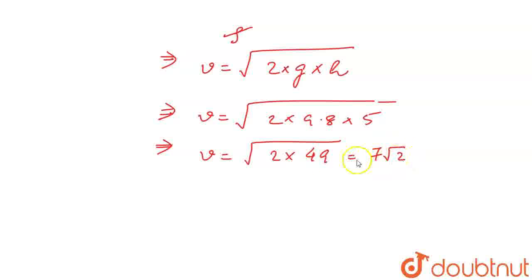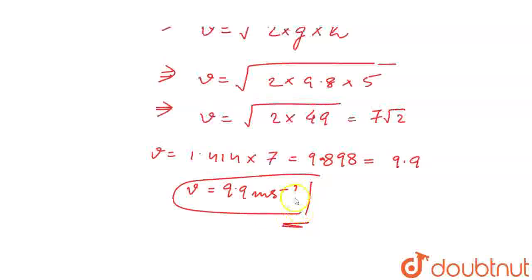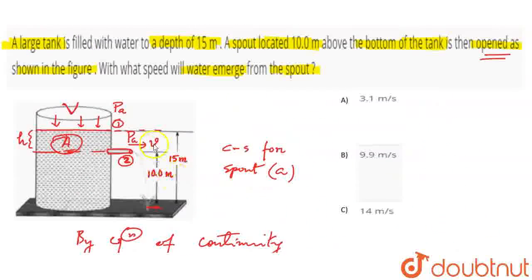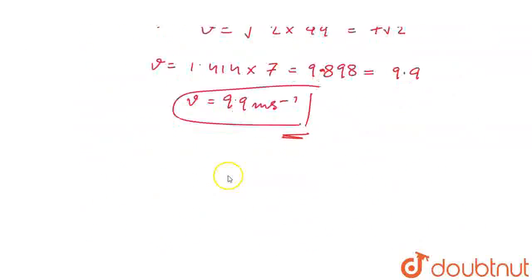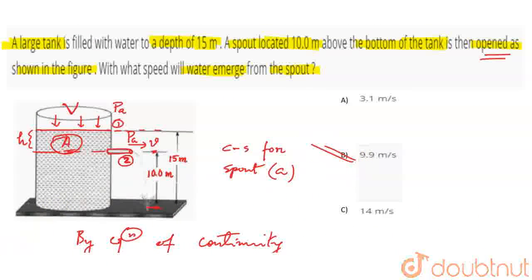So v equals square root of 2 times 9.8 times 5, which equals 1.414 times 7, approximately 9.9 meters per second. So small v is found to be 9.9 meters per second, and we can write option B is the correct option. Thank you students.